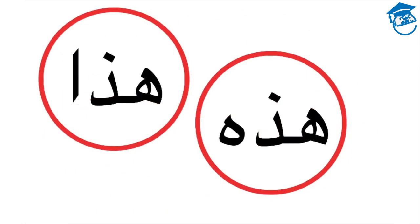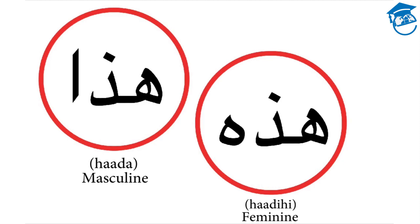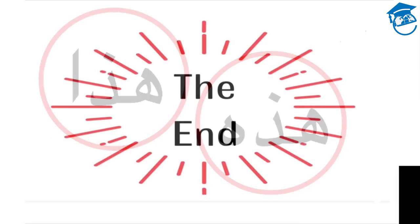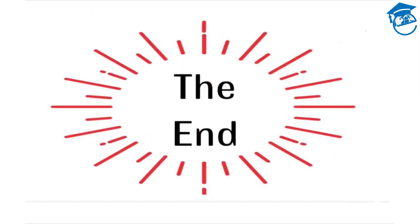By now you should know the difference between Hadha and Hathihi. They both mean 'this' in Arabic, but Hadha is the masculine form used with masculine nouns, and Hathihi is the feminine form used with feminine nouns. This brings us to the end of our video. In part two, we'll look at the difference between Thalika and Tilka. Thank you for watching.